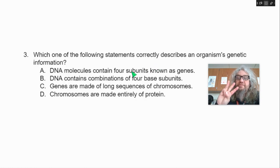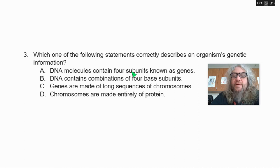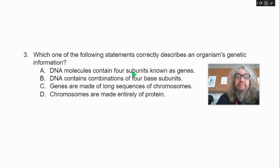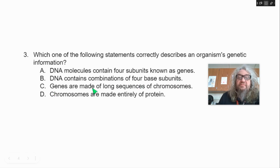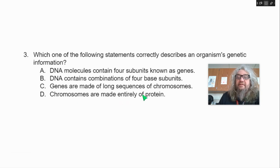Question three. Which of the following statements correctly describes an organism's genetic information? A, DNA molecules contain four subunits known as genes. B, DNA contains the combinations of four base subunits. C, genes are made of long sequences of chromosomes. D, chromosomes are made entirely of protein.